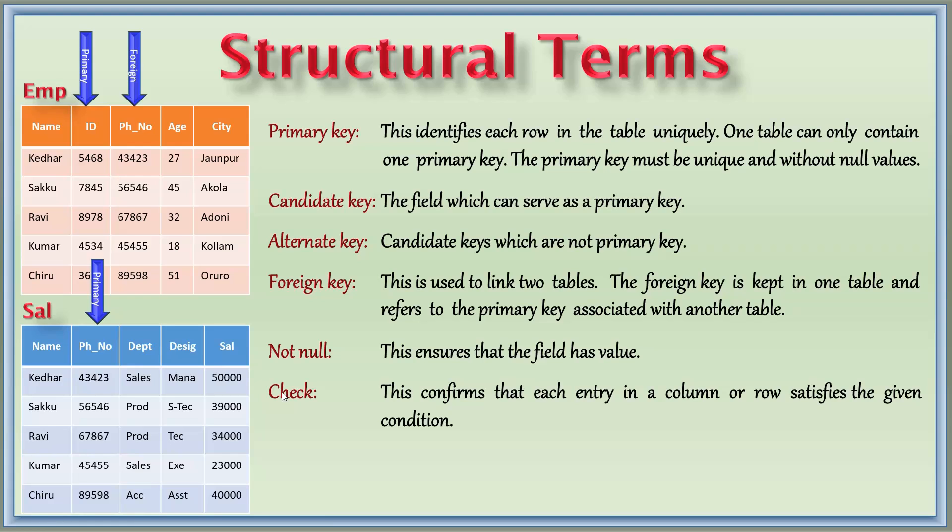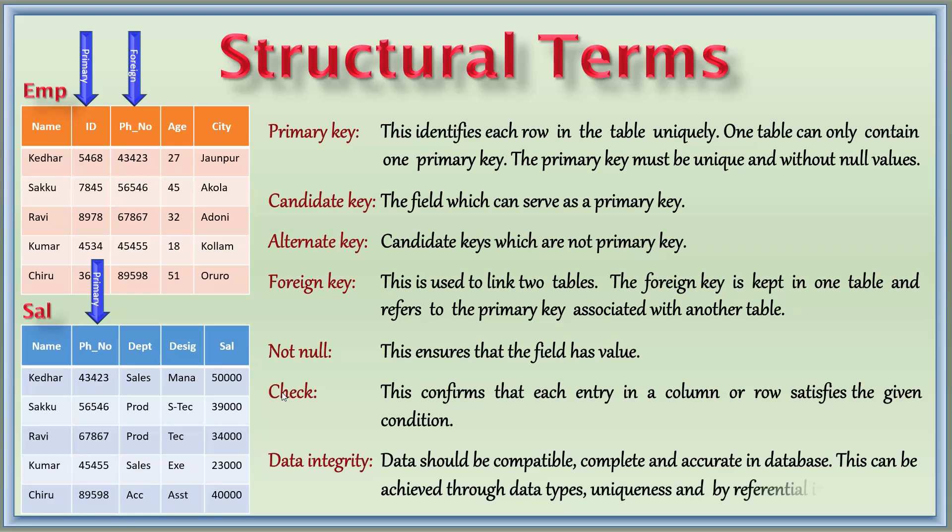If we want to minimize the errors done by humans when the entries are done, the database considers various ways for it. It is called data integrity. So data should be compatible, complete, and accurate in database. This can be achieved through the data types, uniqueness, and also by referential integrity, that is like primary key, foreign key, and all these. These are the main terms to know before starting the structured query language.